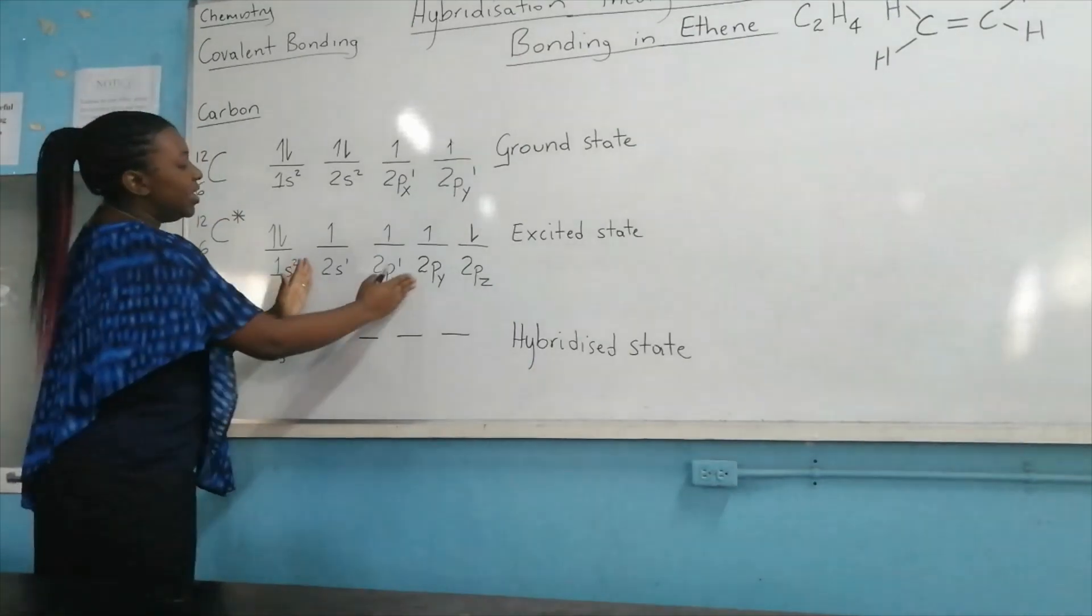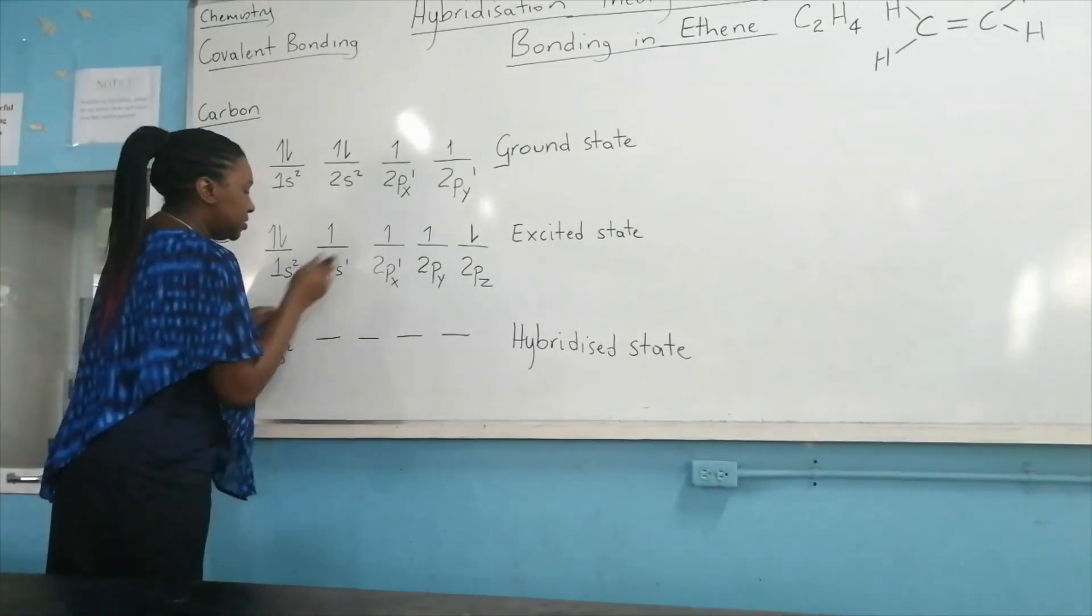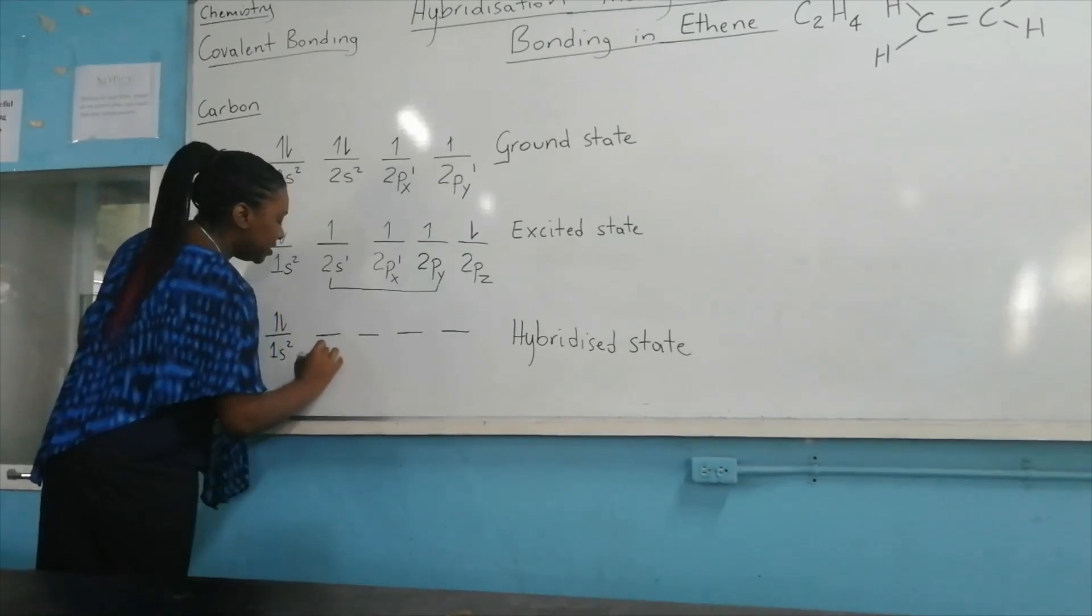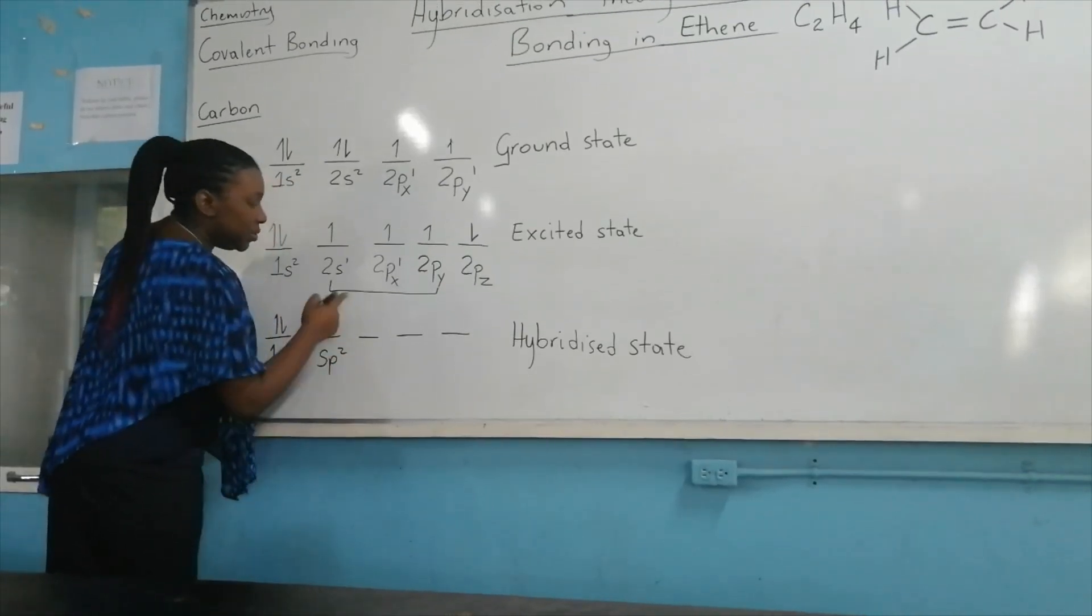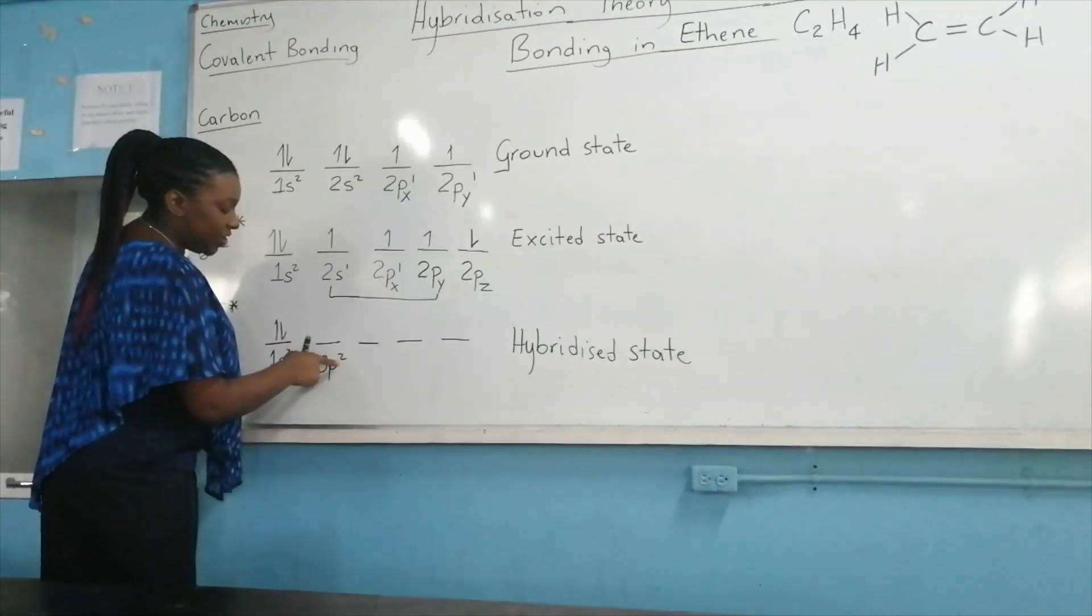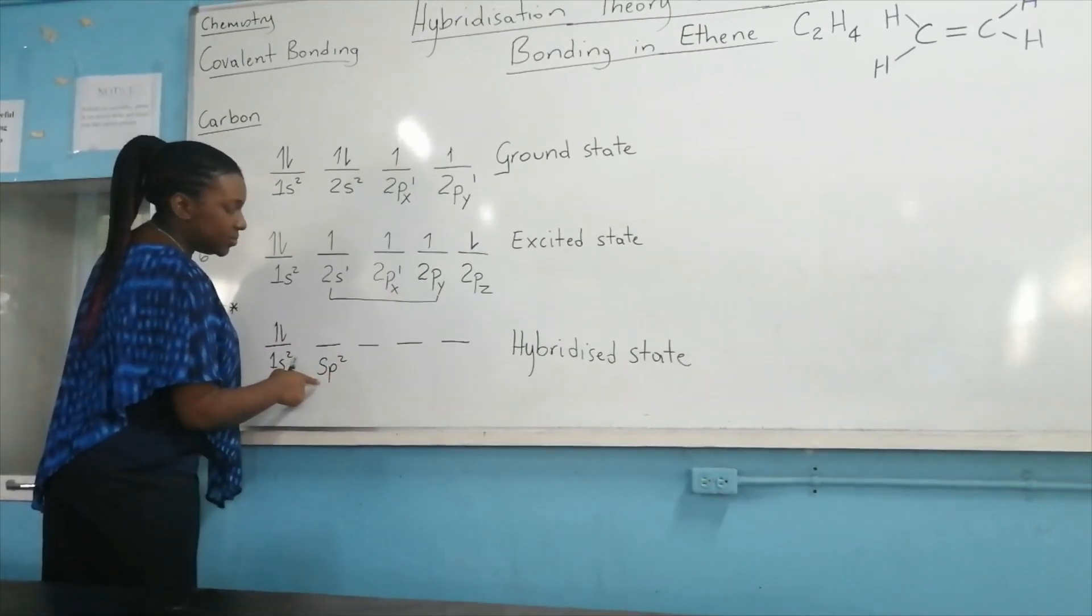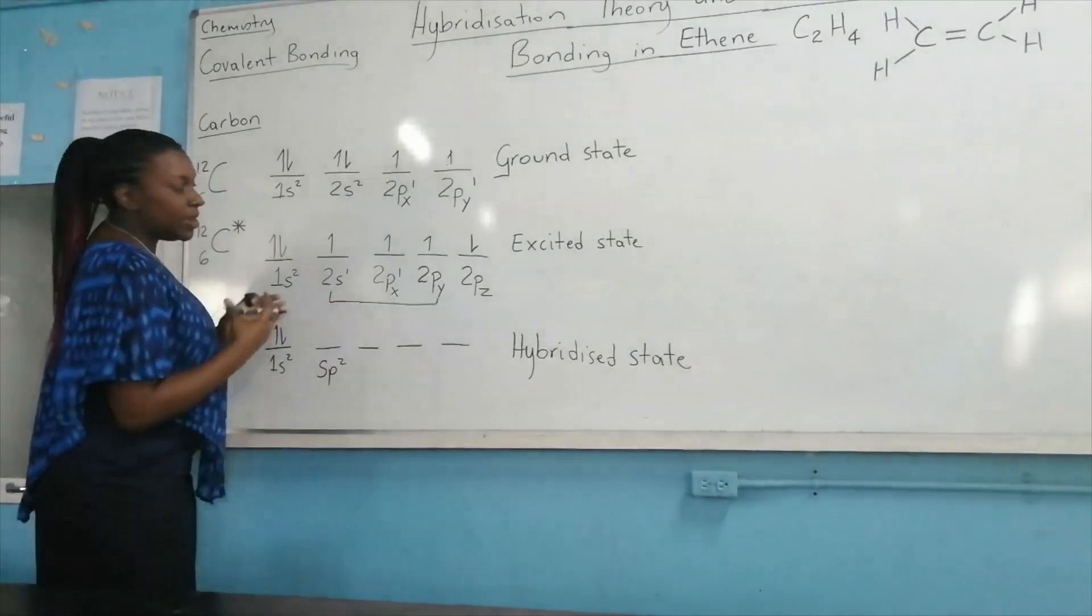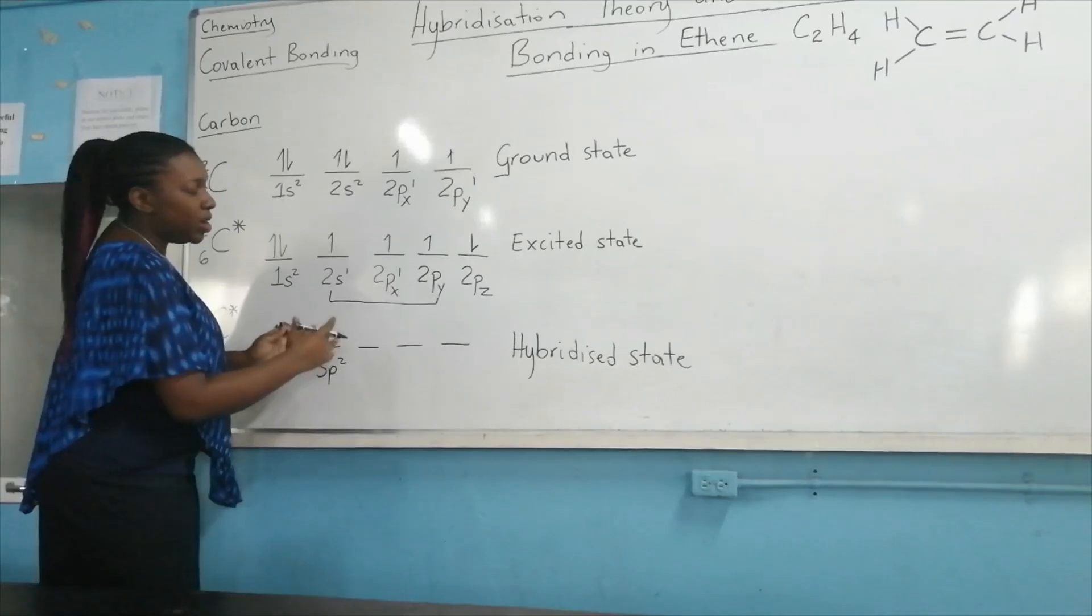So we have the s and two of these p's merging together now to form sp². So we have two p-orbitals involved in this type of hybridization. So we have p² and one s. One, two, three atomic orbitals are involved in this hybridization. So we need to create one, two, three hybridized atomic orbitals.